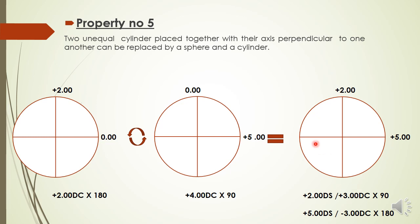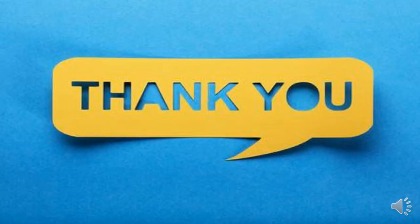Those were the five properties of the cross cylinder. The basic understanding is: a prescription in cross form can be added, subtracted, resolved, or compounded. A single cylinder can be transposed into a sphero-cylinder; a sphero-cylinder can be changed into a single cylinder. Two cylinders can be added or subtracted depending on whether their axes are parallel or perpendicular to one another.